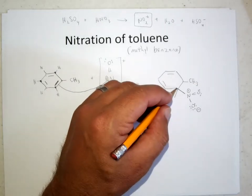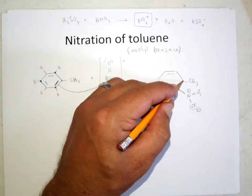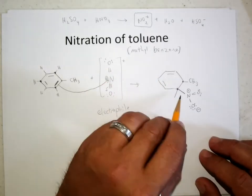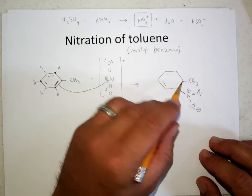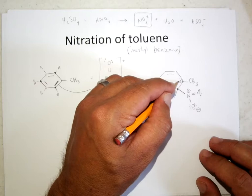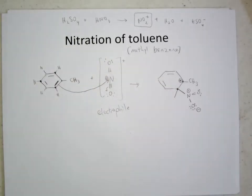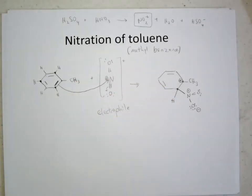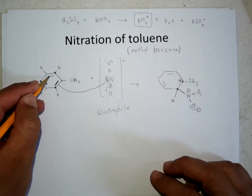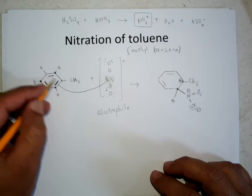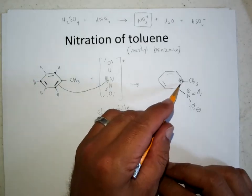So we end up with the nitro group attached to the carbon next to the carbon that has the methyl. Since these electrons move towards this carbon, this carbon ends up being electron deficient and becomes a carbocation. Normally we might expect this carbocation would be very electrophilic and something would bond to it — an addition reaction. But in this reaction, what's more favorable is to reform the aromatic group. The three double bonds in the ring are very stable, so we're going to try to reform this double bond.